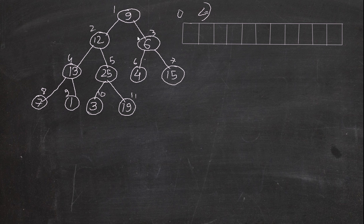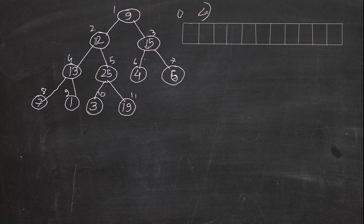Here in this parent we can see that 15 is greater and should be in the parent's place, so we swap the positions of 6 and 15. Now 15 is here and 6 is here. Moving on to this parent — it's smaller than both children, so we have to swap with the largest. 25 is the largest, so we swap 12 and 25. Now 25 is here and 12 is here.